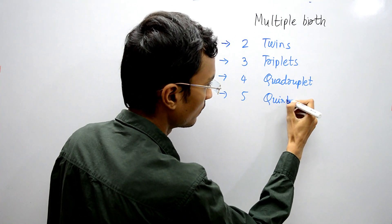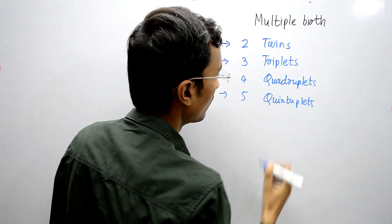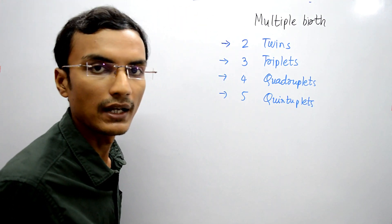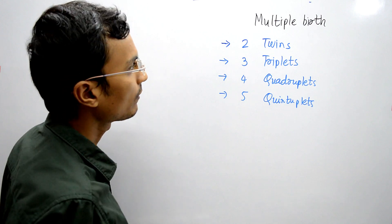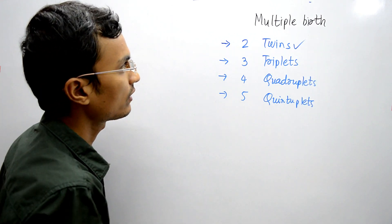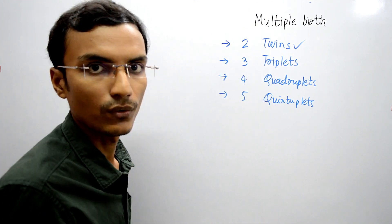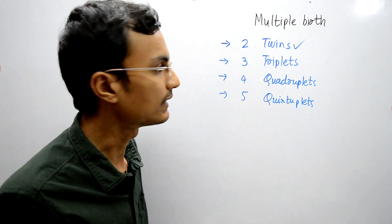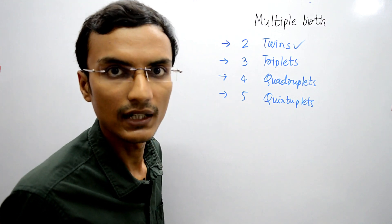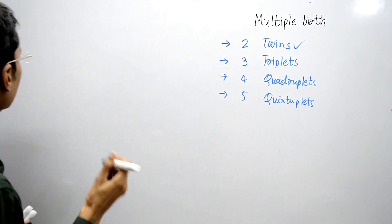Quintuplets are the birth of five individuals at a time. In this video I'll be talking about different types of twins. Twins are a kind of multiple birth, and there are two types: identical and non-identical twins. Let's see about identical twins first.